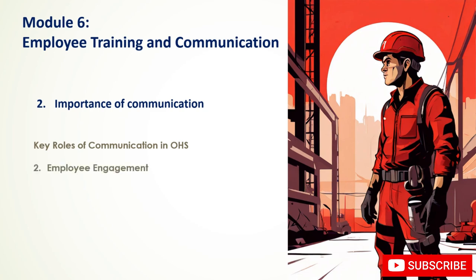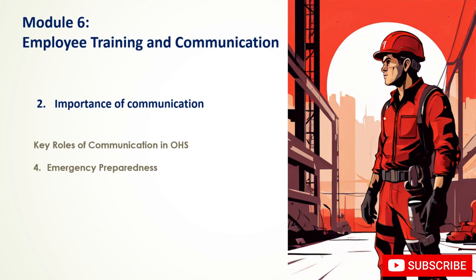Employee engagement involves encouraging open communication about safety concerns and suggestions, promoting employee involvement in safety committees, and building trust between management and employees. Training and education requires delivering safety training programs effectively, providing clear instructions and demonstrations, and encouraging questions and discussions. Emergency preparedness requires developing and communicating emergency plans, conducting drills, and establishing clear communication channels during emergencies.